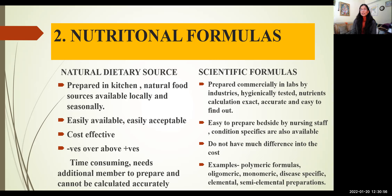On the other side, scientific formulas are prepared commercially in labs by industries. These are hygienically tested formulas where nutrient calculation can be very exact, accurate, and easy to determine. They are easy to prepare bedside by nursing staff, and various condition-specific formulas make our jobs easy — like diabetic formulas, renal formulas, or hepatic formulas — without much difference in cost. Examples include polymeric formulas, oligomeric formulas, monomeric formulas, disease-specific formulas, and elemental and semi-elemental preparations, which we can use in sepsis and critically ill patients.